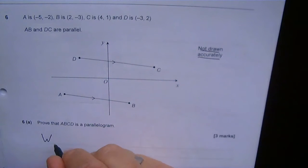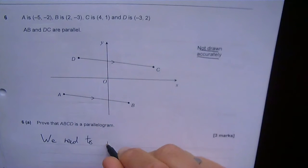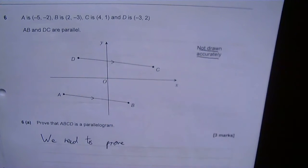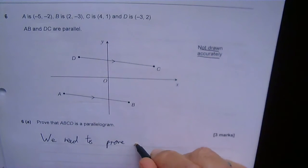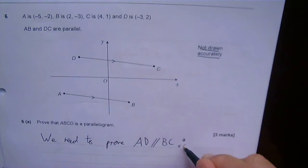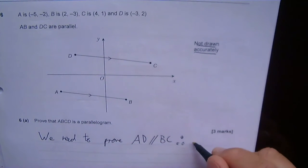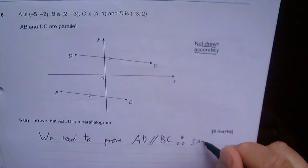So we need to prove, in order for it to be a parallelogram, that AD is parallel to BC. Therefore, my therefore symbol, they have the same gradient. If they're parallel, they have the same gradient. So that's what we need to show.